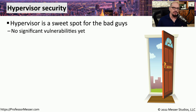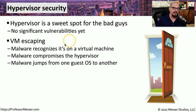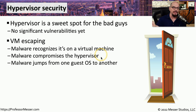One concern when using multiple virtualized environments on one physical device is how secure each VM may be from the others. A major concern is VM escaping — when malware runs on an existing virtual machine and somehow gains access to parts of the hypervisor itself. Once the malware gains access to the hypervisor, it's able to hop to any of the other virtualized systems managed by that hypervisor. In the past, certain hypervisors have been identified where VM escaping was possible.